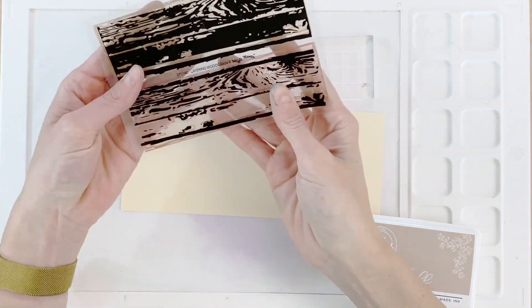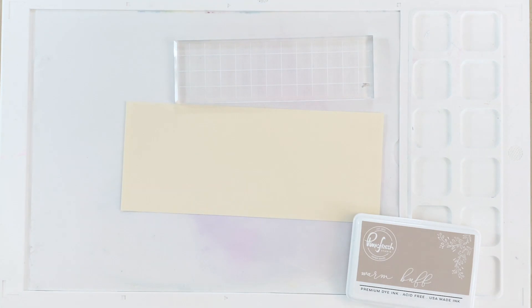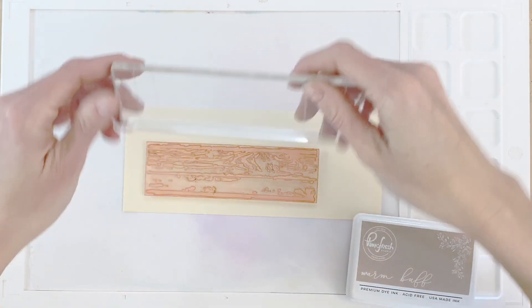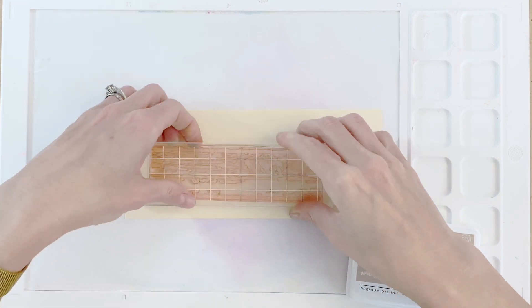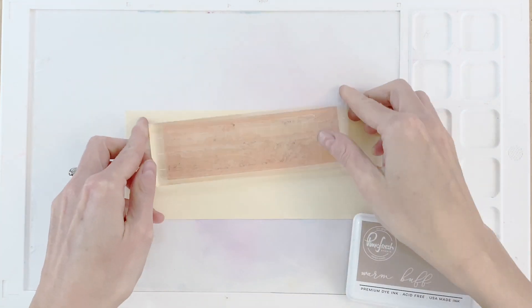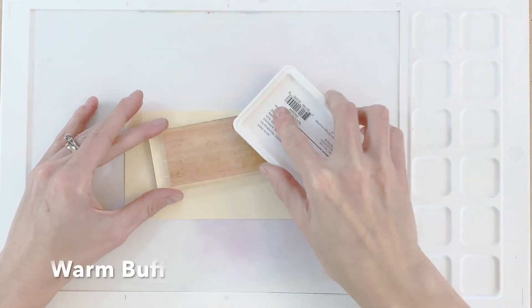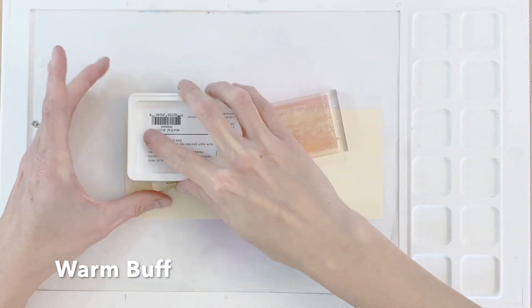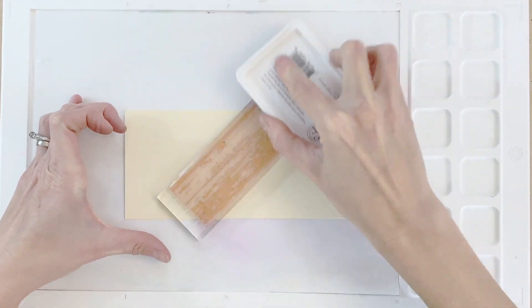I'm now moving on to stamping the background for my card. I have my beloved layering wood grain stamp set here from Waffle Flower. This is a layering stamp set and I've pulled off the detail layer so kind of the second layer for this stamp set and I've mounted it here on a long acrylic block and I'm going to hand stamp this background. I'm going to ink up this wood grain stamp with a nice tan color. This is Warm Buff from Pink Fresh.